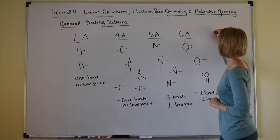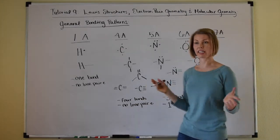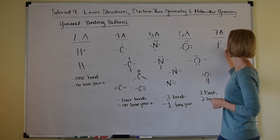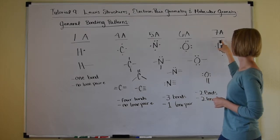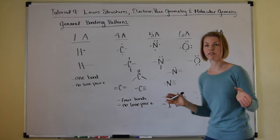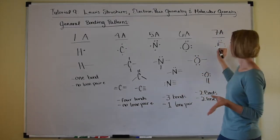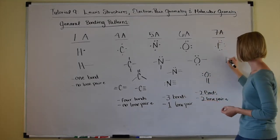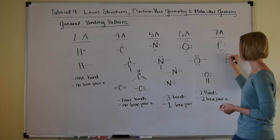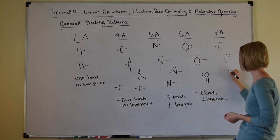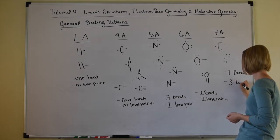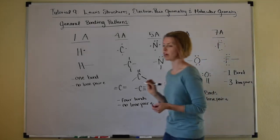Group 7A, such as fluorine — your halogens — have seven valence electrons. Typically your halogens will form one covalent bond and keep three lone pairs to themselves. The typical bonding pattern is just one bond and three lone pairs of electrons.